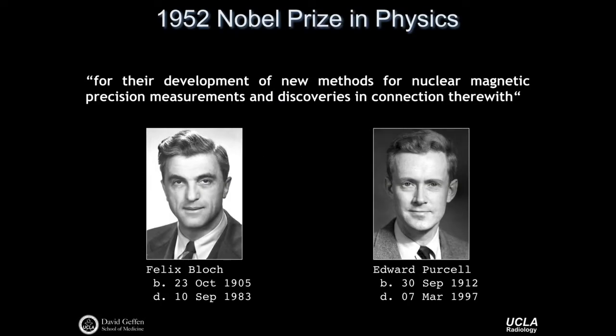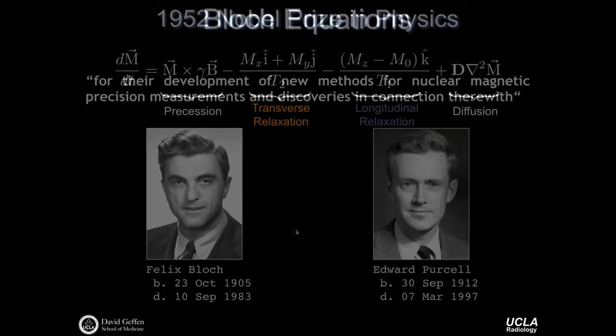So what is it that fundamentally underlies contrast in an MR experiment? It's the Bloch equations. So these nice and handsome gentlemen were awarded the 1952 Nobel Prize in Physics for their development of new methods for nuclear magnetic precision measurements and discoveries in connection therewith. So we have Felix Bloch here on the left-hand side and Ed Purcell here on the right-hand side. And together, they are fundamentally responsible for describing a set of equations that help us understand the NMR experiment.